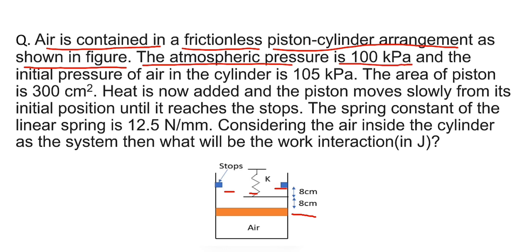The atmospheric pressure is 100 kPa and the initial pressure of air inside the cylinder is 105 kPa. The area of piston is 300 cm².